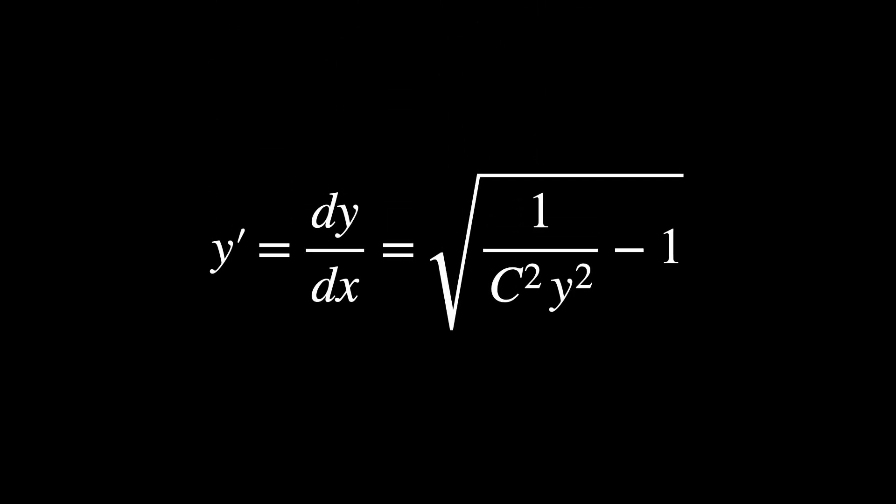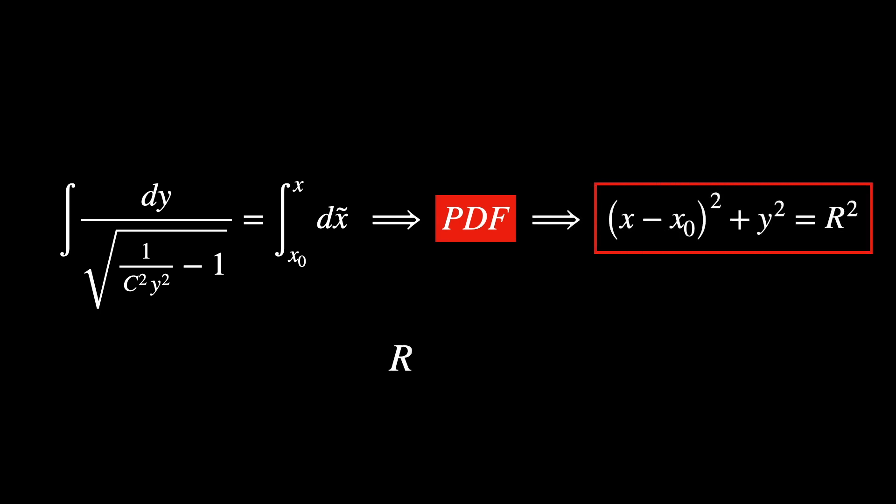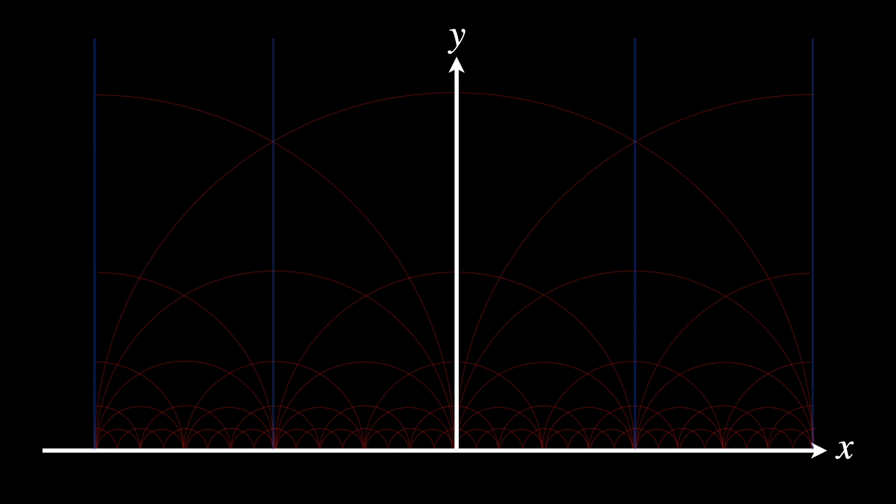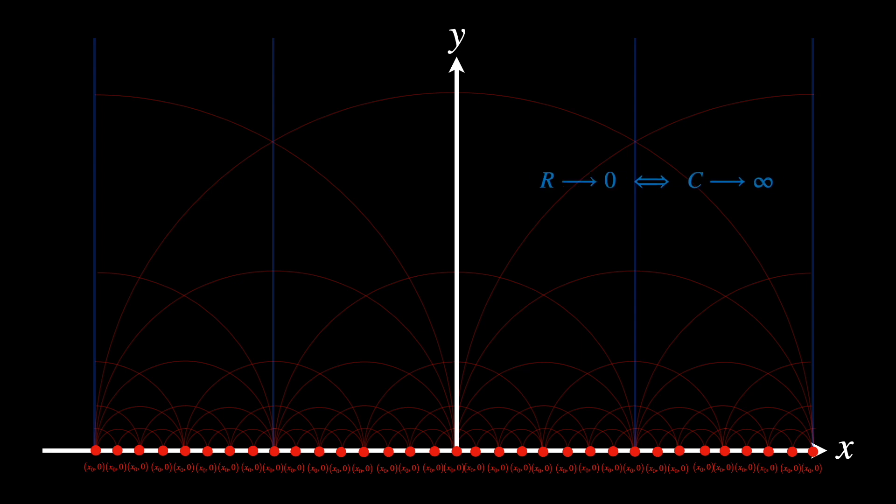Anyway, we can isolate y' instead. And doing so, we can clearly see that this is a first-order differential equation for y of x. Well, we can solve it. And after doing so, that's what we get. Therefore, geodesics in the Poincaré half-plane are exactly Euclidean semicircles centered at the point (x₀, 0). And vertical lines are special cases in which the center is at infinity, so r tends to 0, or what is equivalent, c tends to infinity.